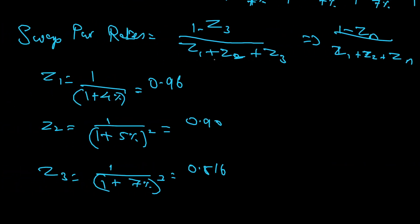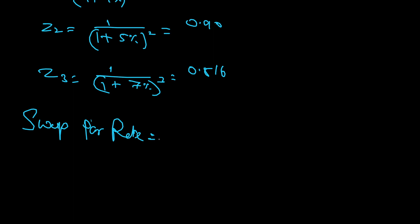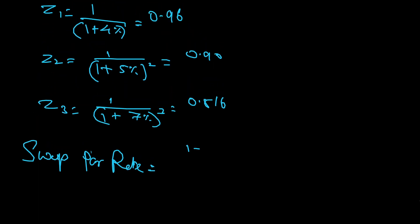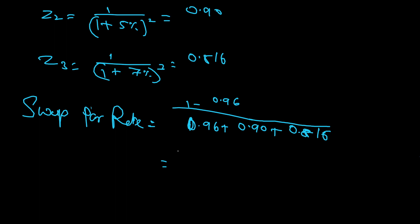Now I'll plug all these numbers into the formula. Swap par rate = (1 − 0.816) / (0.96 + 0.90 + 0.816). Solving this, I get 6.84%. This is called the swap par rate.